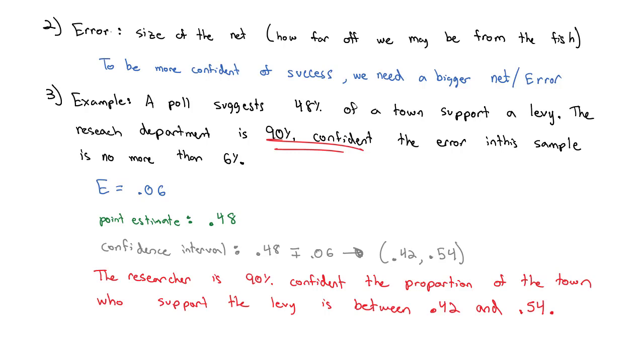So let's look more at what this actually means. Looking more at what this actually means, when I say we're 90% confident, we're actually saying how confident we are we actually catch the fish. So visually, let's look at this. Let's say visually, this line represents the true proportion of people in the town who support the levy.